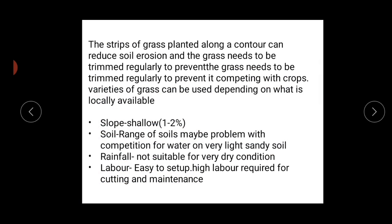For conditions with grass strips, the slope is shallow — about 1 to 2 percent — and it works well in all ranges of soil, but there is competition for water on very light sandy soil. Rainfall should not be less than 500 mm, so it is not suitable for very dry conditions. Setup labor is relatively easy, but high labor is required for cutting and maintenance. A major variety of crops can be grown with this technique.